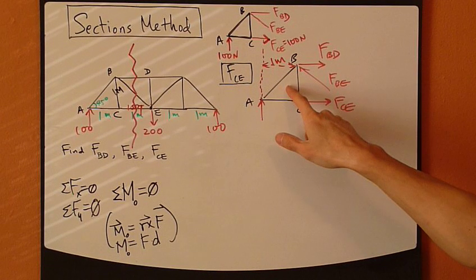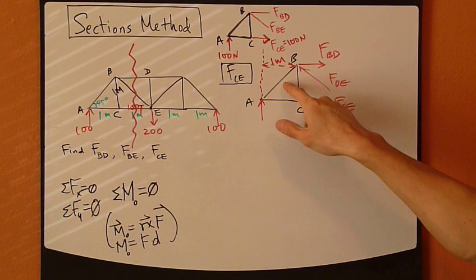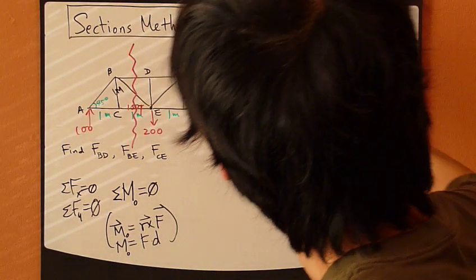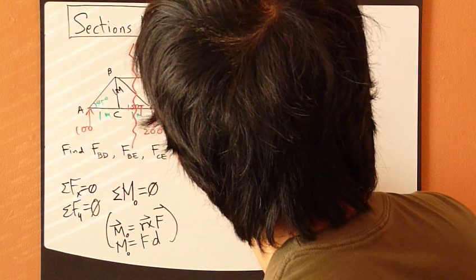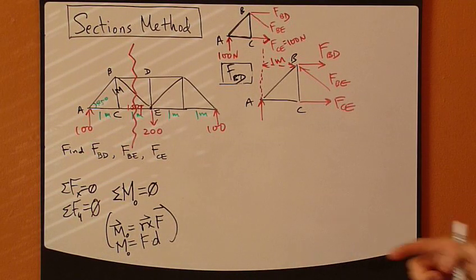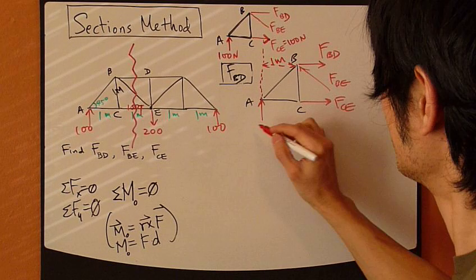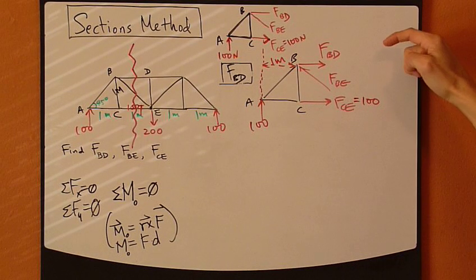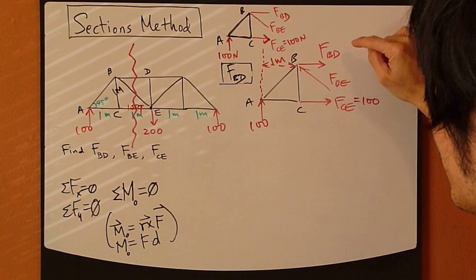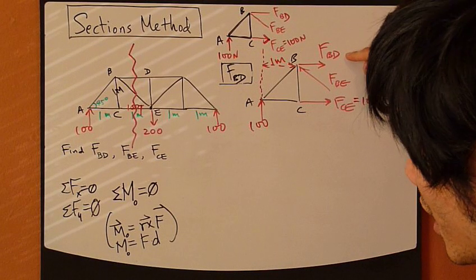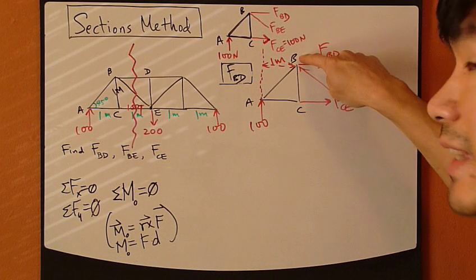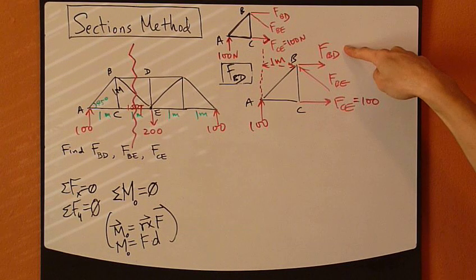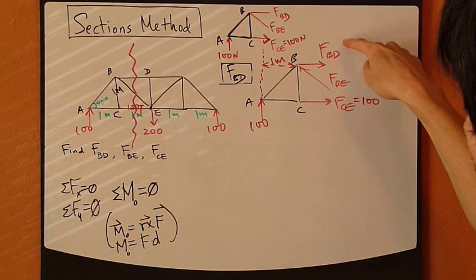We can use exactly the same free body diagram. Except now the unknown is FBD. At this point, FBE is known — you've calculated it to be 100 Newton. Now, obviously we cannot sum moments about point B again, because FBD would disappear. We want the FBD term to survive the equation, so pick another point where FBD exists but FBE disappears.